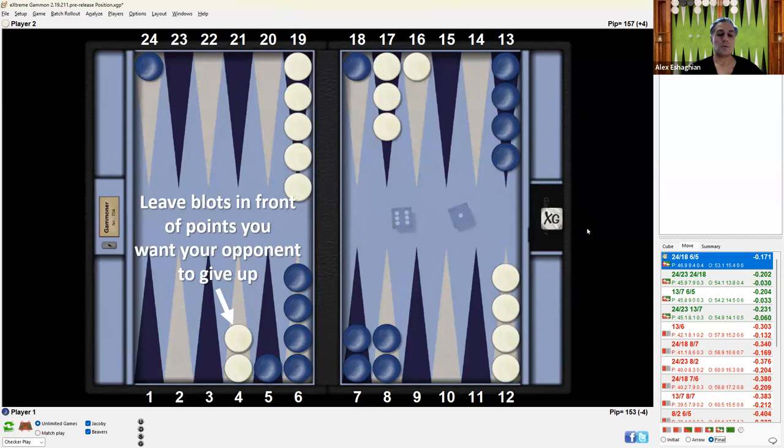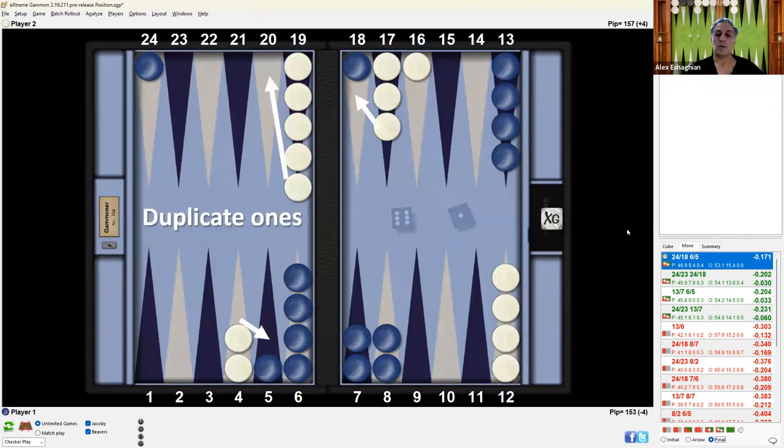The other thing you want to do is leave blots in front of points you want your opponent to give up. So this is a valuable anchor. Your opponent does not want to break this anchor to hit. You also duplicate the ones or the aces. So ones can be used to hit here, or they can be used to hit here in the case of, for example, a 2-1 or a 6-1. And ones can also be used to make the 5 point in the case of a 3-1 or a 4-1. So you're duplicating numbers.